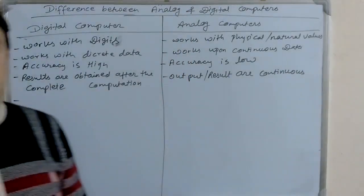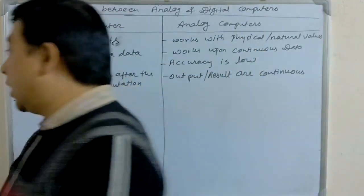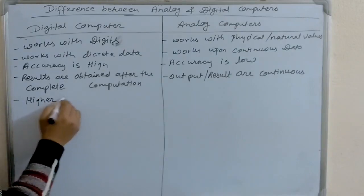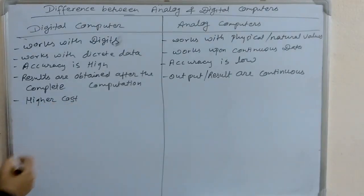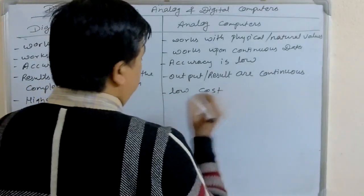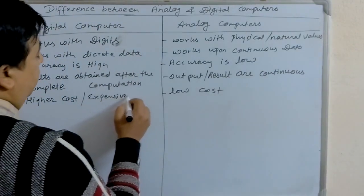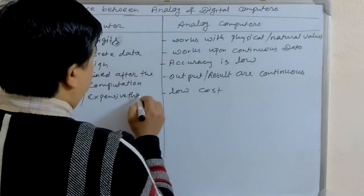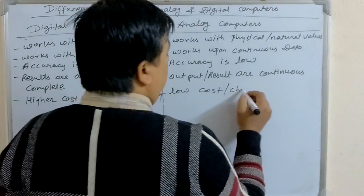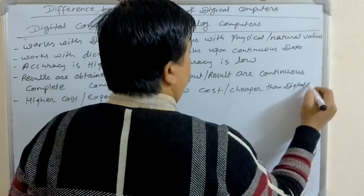The next point is, the cost of digital computers is higher than the cost of analog computers — they are more expensive. Analog computers are cheaper than digital computers.